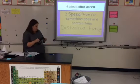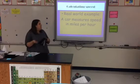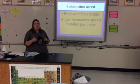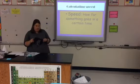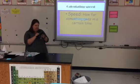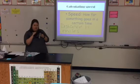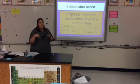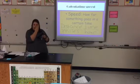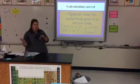Let's look at an example we all know — riding in a car. We know that a car measures speed in miles per hour. Looking at our definition, we have a distance measured in miles and a time measured in hours. So what does 'per' mean? It just means divided by. So in this example, I have miles divided by hours, or distance divided by time.